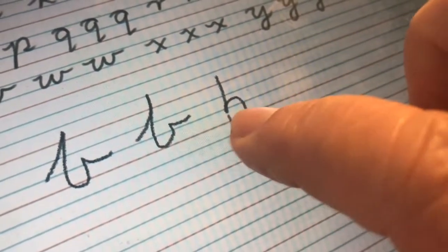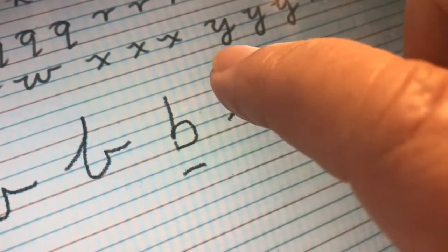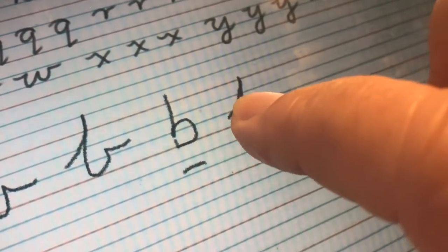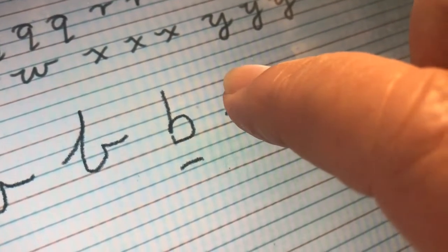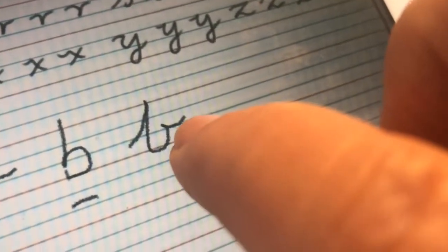I'll show you how. That's our printing, but this is how we do our cursive. We go up for the stick, and then down to the bottom line in the train tracks, and then around, and a tail. And that's the tail that's going to join on to another letter.